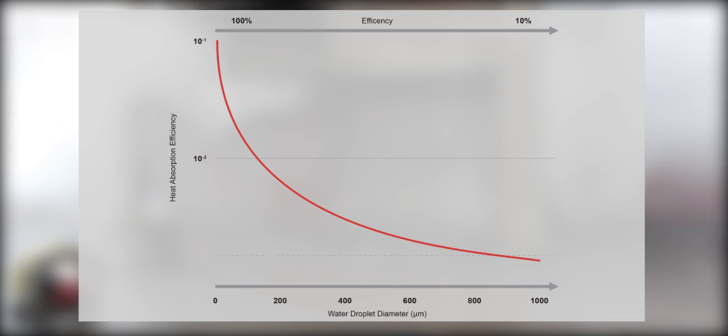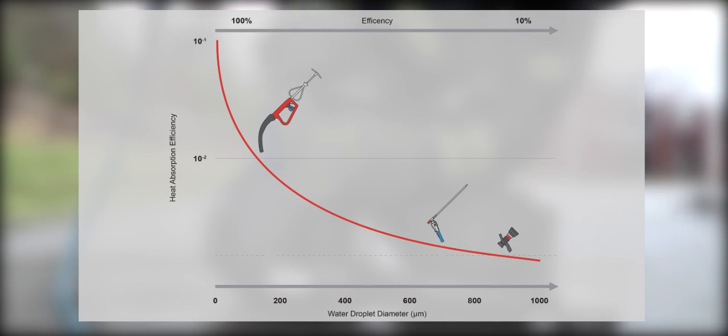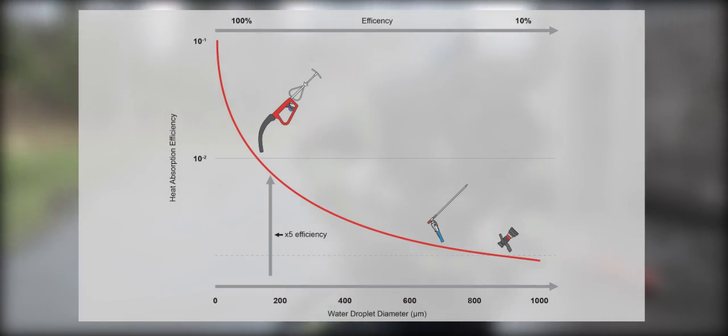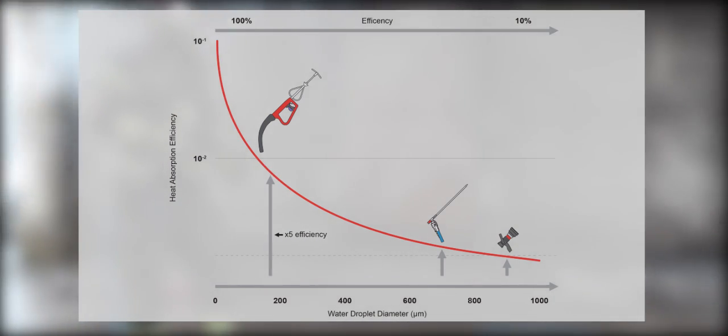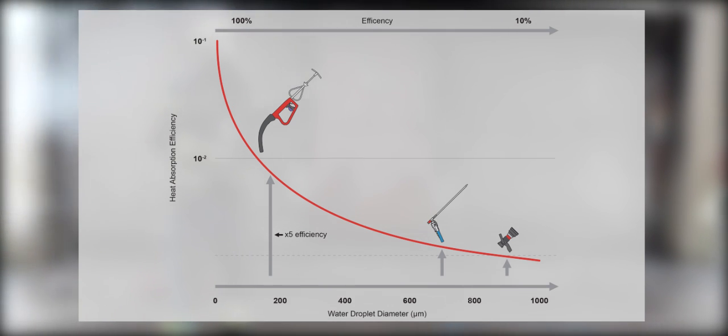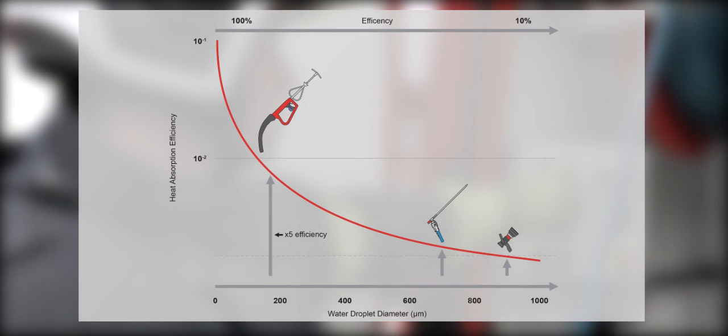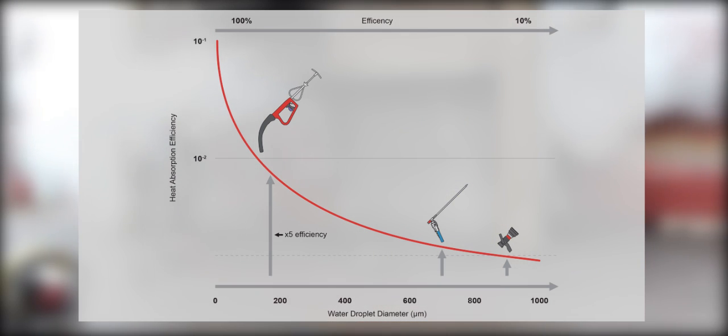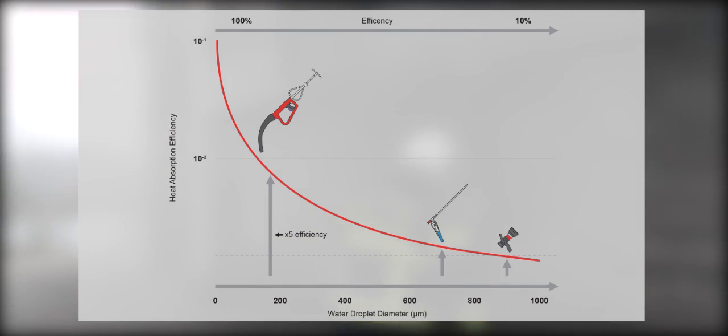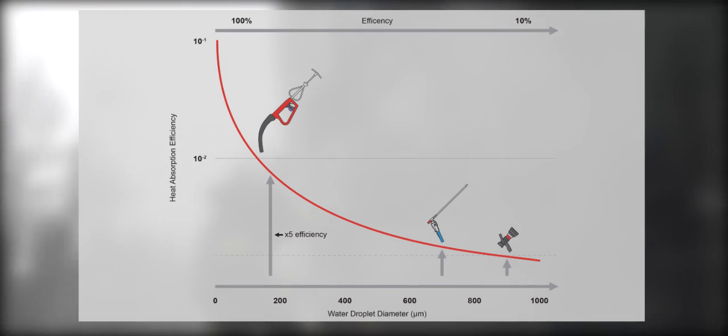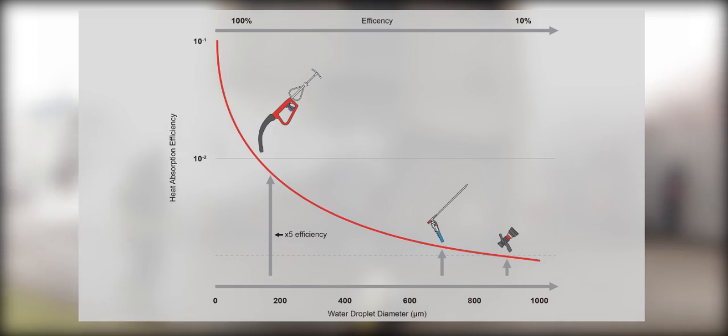The following graph displays the heat absorption comparison between the Cobra and other systems. The graph demonstrates that the Cobra efficiency is five times higher than the other tested systems only due to the droplet size. When considering the much higher speed, the effect is several times higher. The heat absorption efficiency confirms the common empirical view that only 5 to 10 percent of the water of conventional firefighting is effective, while 90 to 95 percent of the water from the Cobra actually suppresses the fire.